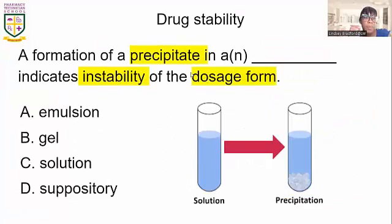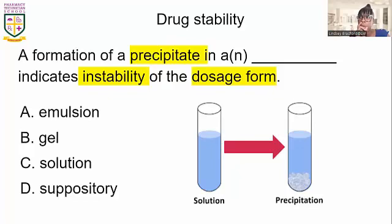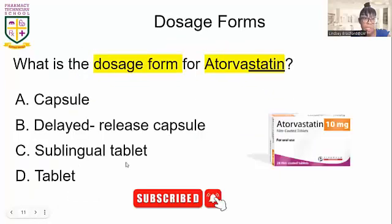Drug stability. A formation of a precipitant and a blank indicates instability of the dosage form. Instability means something that is not stable — something that is breaking apart, falling apart, something that does not resemble what it should have been when you first got it. It crystallizes. We're looking for a solution — the answer is C, solution. Precipitation is when it crystallizes. A formation of precipitation lets us know that drug is no longer good and we should not be using it. It's like milk — when you see clumps, you throw it out because it'll make you sick.